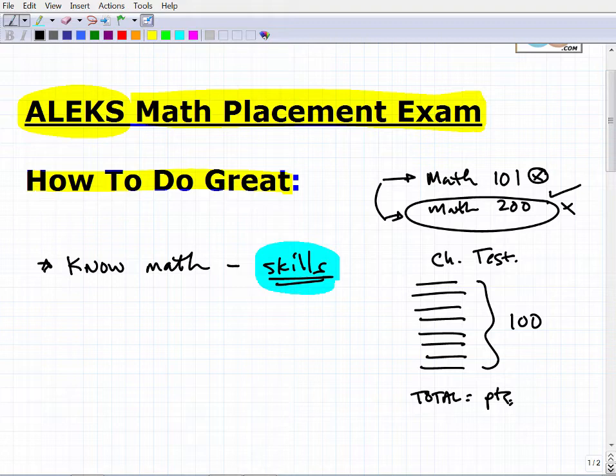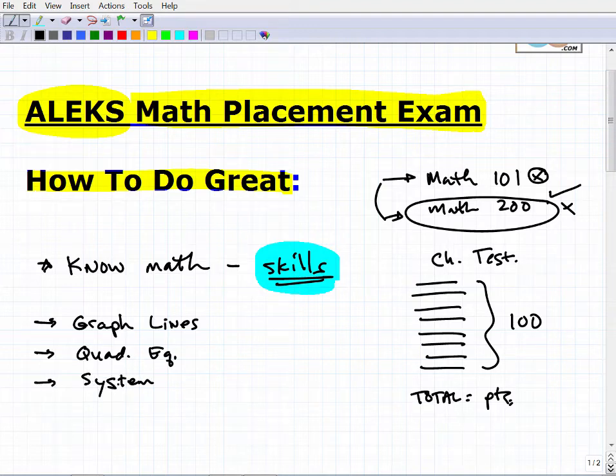What's a math skill? A math skill you can think of as like your ability to graph lines, for example. That's a skill. In other words, there's a lot of things you need to know in order to be able to graph lines in algebra, or your ability to solve quadratic equations, or your ability to solve systems of equations. And then there's obviously sub-skills within these skills. You can kind of think of skills in mathematics in terms of like chapters and sections in a traditional course format.